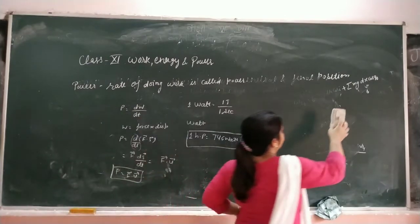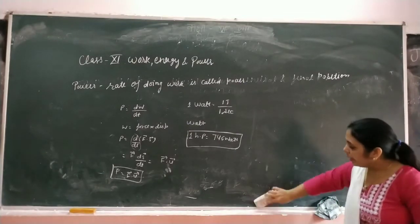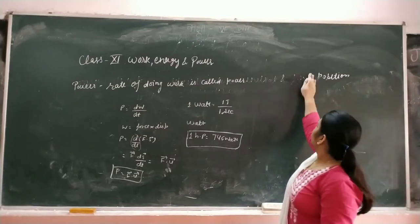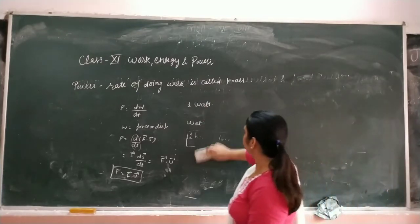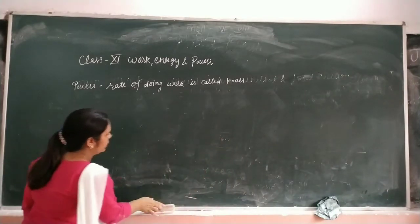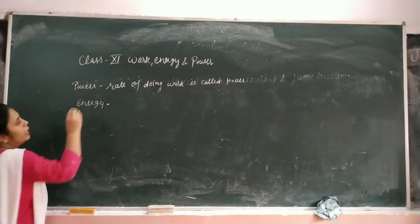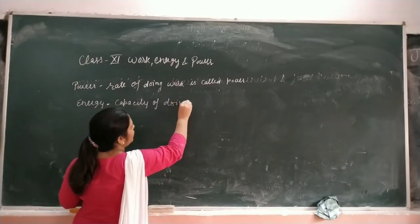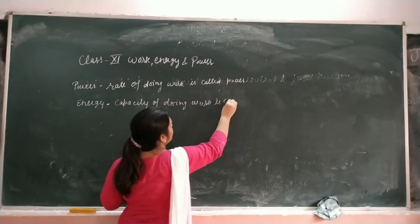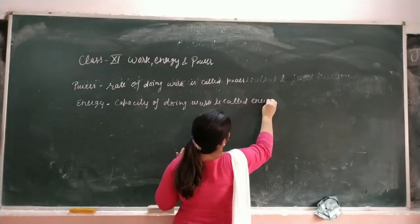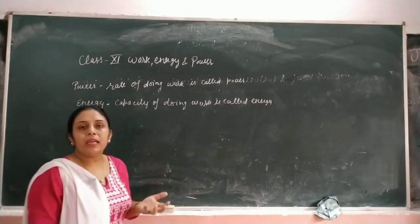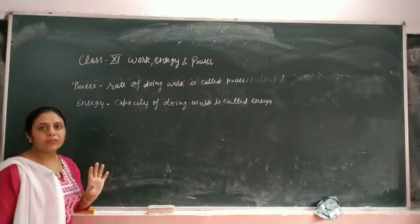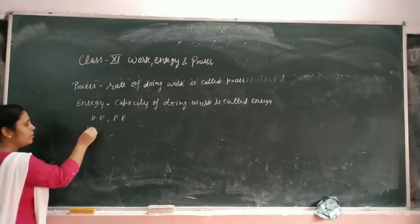Next we will do kinetic energy. Energy ke do types hain: kinetic energy and potential energy. Kinetic energy depends on the motion of the object. Potential energy depends on the position of the object. Energy kya hoti hai? Capacity of doing work is called energy. Just like if you don't eat food for 2 days and don't have energy, you can do zero work - capacity of doing work is called energy.